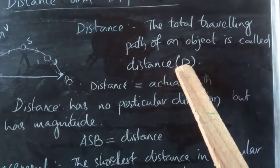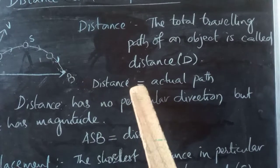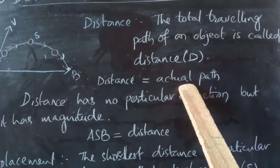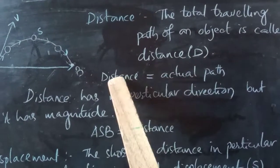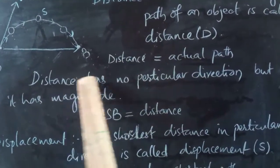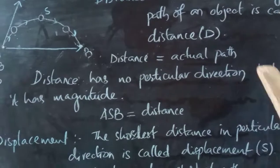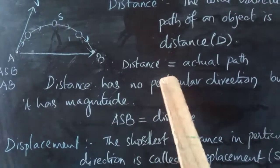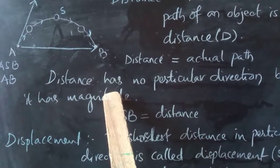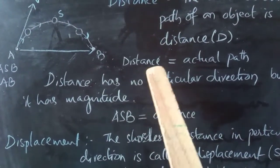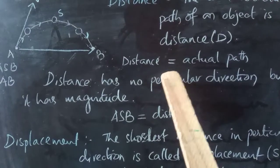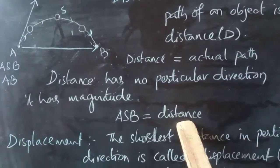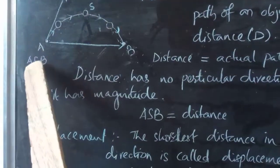You can symbolize distance as D. Distance equals the actual path that the ball or object moves. Distance has no particular direction but it has magnitude. The long actual path from A to S to B — that entire path is the distance.